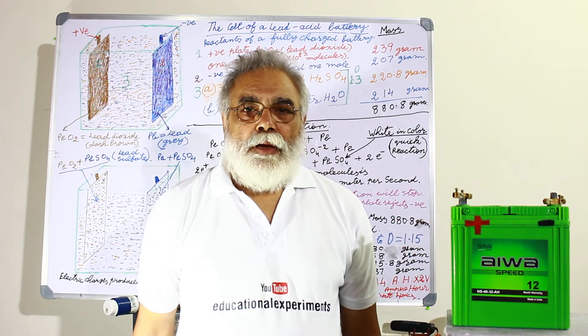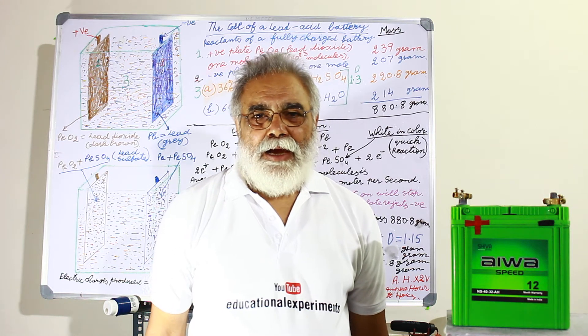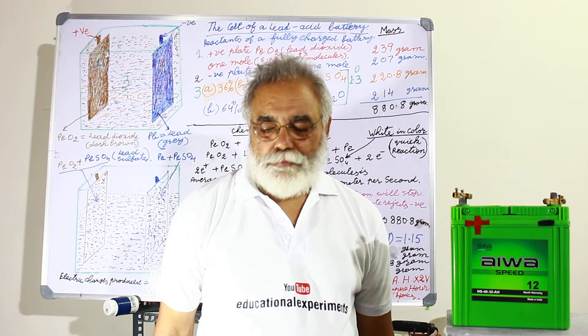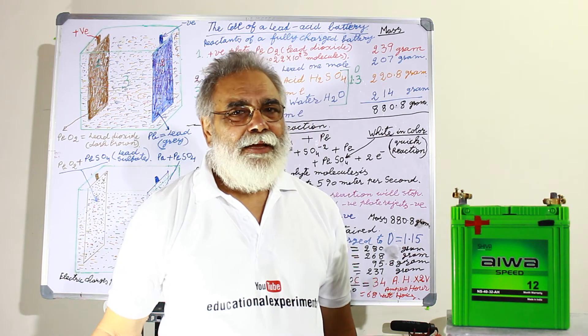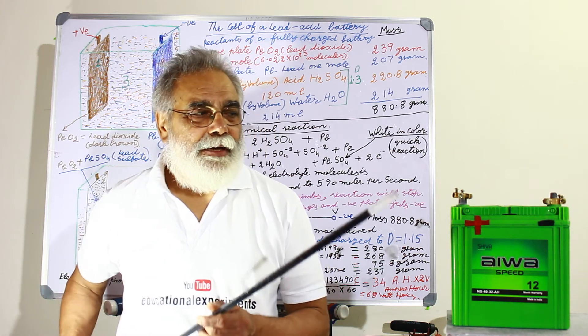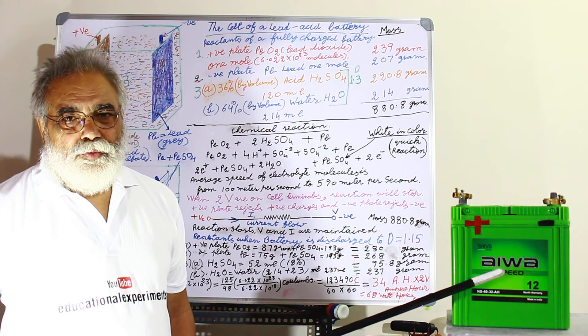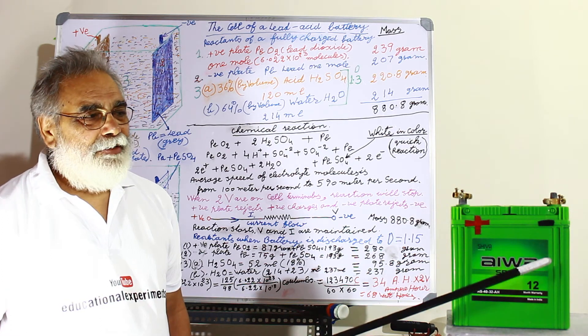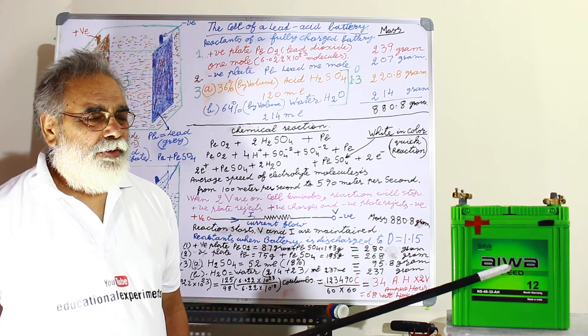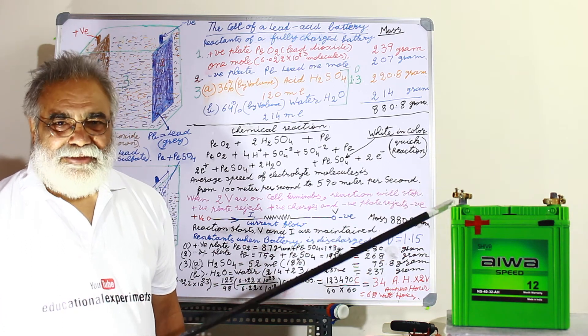Students, I am Randarwalia. Today I will explain to you how a lead acid battery works. Here is a lead acid battery, 32Ah and 12V and it has 6 cells.